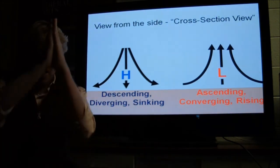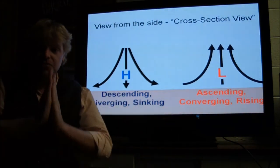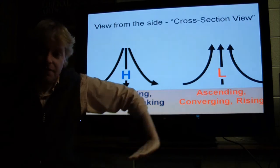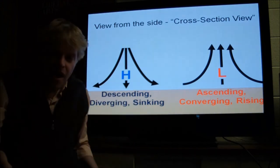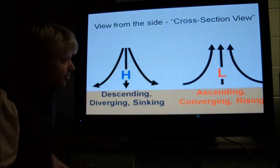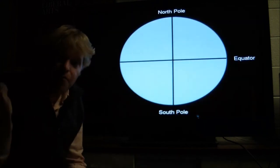Now when I'm doing this, now I'm illustrating a low pressure. Low pressures ascend, converge, and rise. So two different characteristics, the top view and the cross-section view of a high pressure and a low pressure.